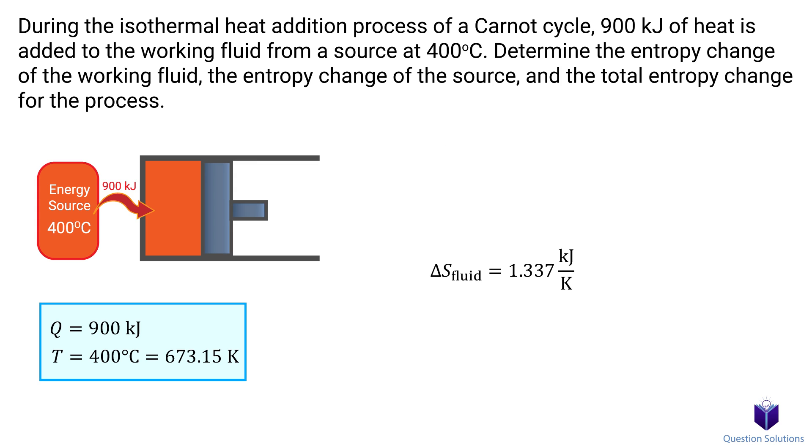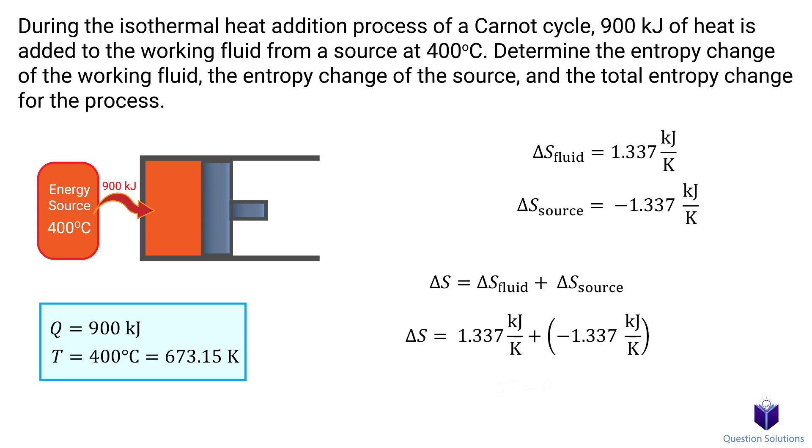Next, we need to find the entropy change of the source. When we look at the source, it lost 900 kJ of energy, so it will be negative. The last part wants us to figure out the total change in entropy. That's the addition of both of these values. We get zero and that makes sense. A Carnot cycle is a fully reversible cycle, so the entropy change would be zero.